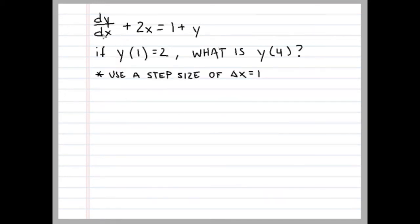So now we're going to look at the original problem we had. dy/dx + 2x = 1 + y. If y(1) equals 2, what is y(4)? Now remember, we can't find the exact value of y(4), but we can use Euler's method to approximate this value. And we're going to use the step size of Δx equals 1. I'm going to pull up the formula we came up with so we can use that as a reference. And we're going to change this differential equation so that dy/dx is on one side. So dy/dx equals 1 + y - 2x. And now we can use Euler's method.